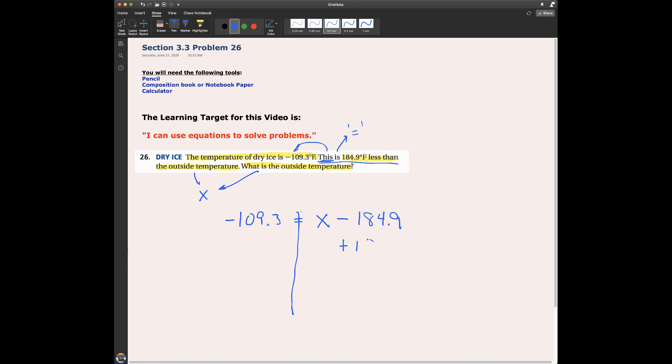I have an equation. I can solve it. I go ahead and add 184.9 to this side because it will cancel out with this negative 184.9. And I have to add 184.9 here because the addition property of equality says that I have to, if I want to keep this equation equal.